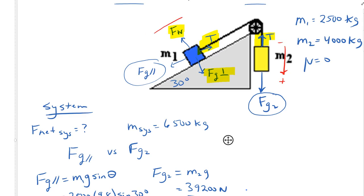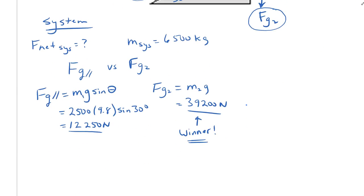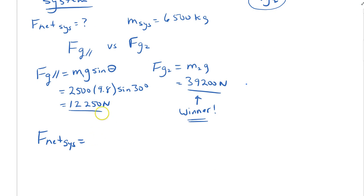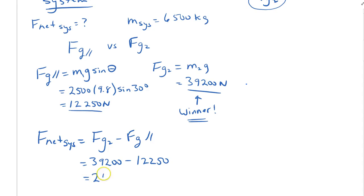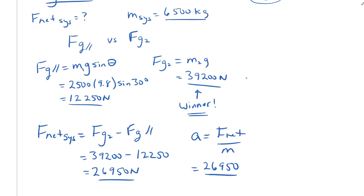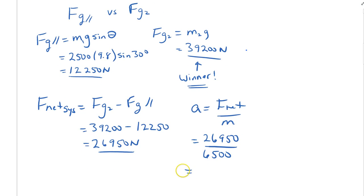Mass one will be accelerating up the inclined plane — that's positive. Writing our F net statement for the system: F net equals Fg2 minus Fg parallel, which is 39,200 minus 12,250, giving a net force of 26,950 newtons. Acceleration equals F net over mass, so 26,950 divided by 6,500, giving us 4.15 meters per second squared.